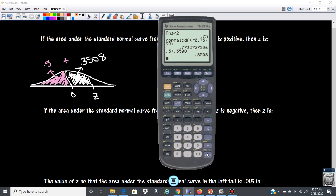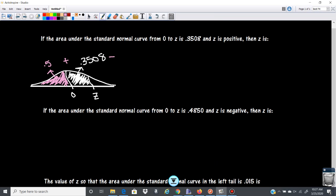So 0.5 plus 0.3508 is going to give me 0.8508. Okay, so for the z score, okay, the area to the left of the curve is 0.8508. So we're going to use the calculator command inverse norm. And it's right under that normal CDF.